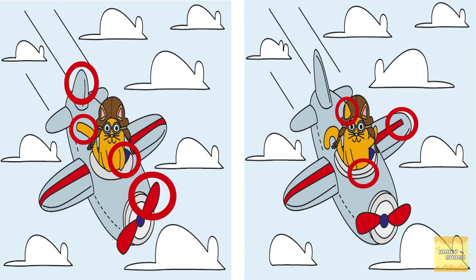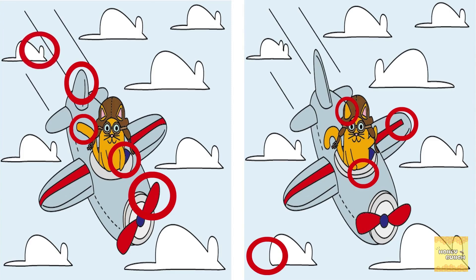The seventh difference is that the propeller is in a different angle. The eighth difference is that the rat does not have its tail. The ninth difference is that the rat is having only one ear.